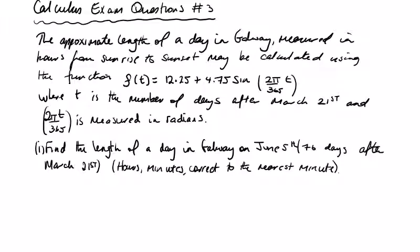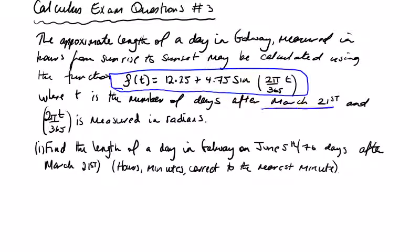In this video we're going to look at calculus exam questions — the third video of questions from 2010 to 2019. The approximate length of a day in Galway, measured in hours from sunrise to sunset, may be calculated using the function f(t), where t is the number of days after March 21st and 2πt/365 is in radians.